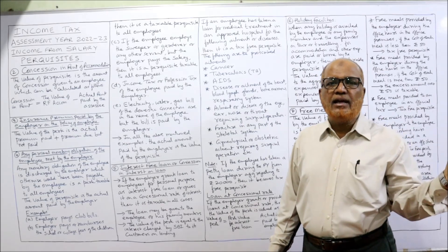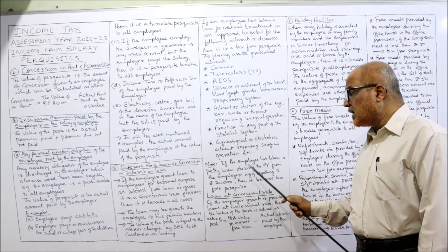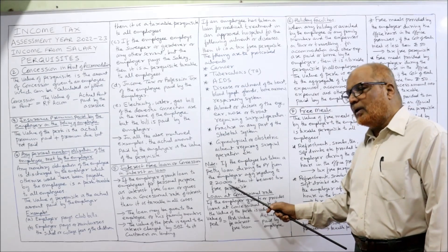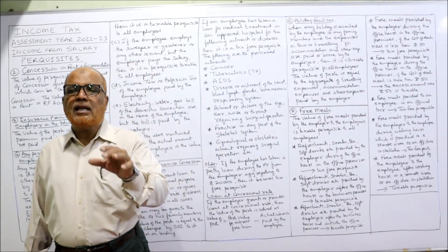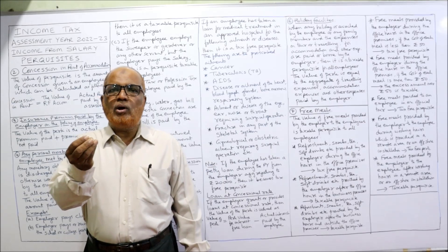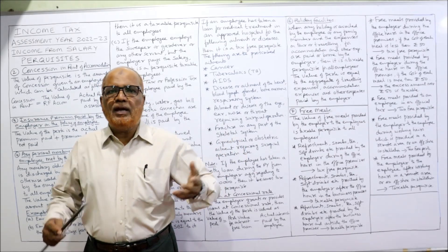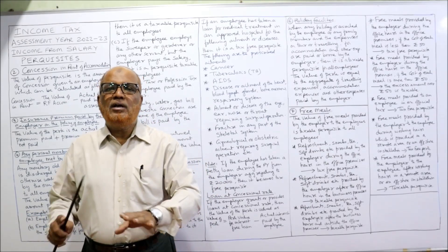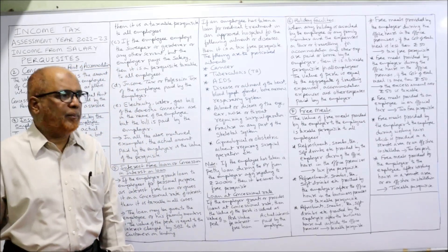Also note: if an employee has taken a petty loan during the previous year from the employer aggregating to 20,000 rupees or less, it becomes a tax-free perquisite. Petty loan means up to 20,000 rupees, not more. If an employee takes small loans — sometimes 5,000, sometimes 10,000, sometimes 2,000 — and the aggregate of all loans taken is up to 20,000 rupees, it is a tax-free perquisite with no tax applicable.